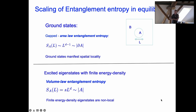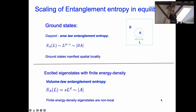The ground states minimize local Hamiltonian terms and typically show low entanglement. But if you take a quantum Hamiltonian and look at excited states with a finite energy density per volume — very high energy excited states, kind of like thermal states — they have a volume-law entanglement entropy, scaling with the volume of the system. This means everything is entangled with everything else at finite energy density, as things are free to move around and get entangled.